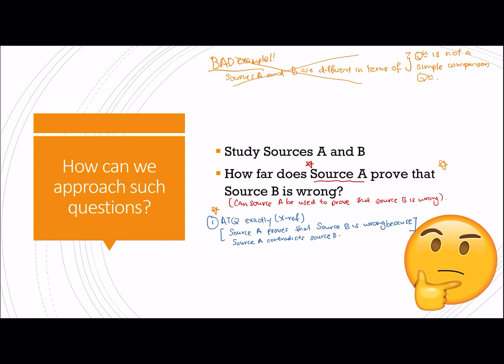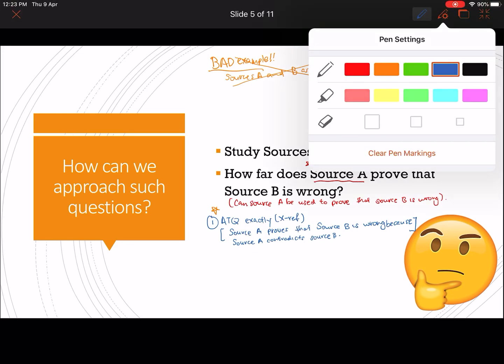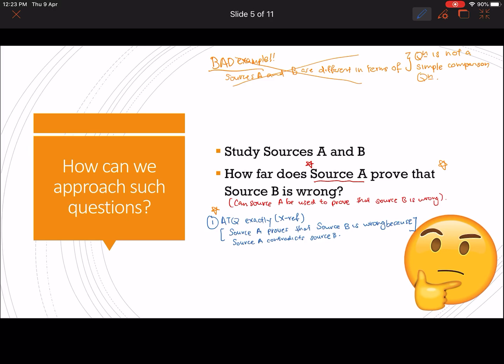So what do we do next after we do our cross-referencing and ATQ exactly? Then you need to ask yourself, is it really enough or not, that source A contradicts source B and therefore source B is wrong? And as historians, I hope you all already know that obviously this is not enough. So what do we need to do next? We need to check whether source A can be used to prove B is wrong or not. So our next step is actually to check the provenance of source A in order to check its reliability.